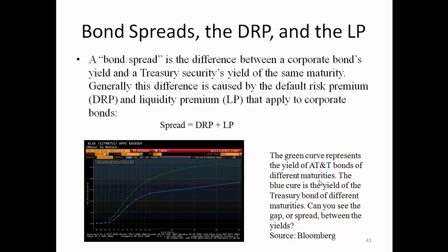A bond spread is the difference between a corporate bond yield and a treasury securities yield of the same maturity. This difference is caused by the default risk premium and liquidity premium that apply to corporate bonds. Treasury bonds are considered risk-free with no liquidity problems, so their default risk premium and liquidity premium are both zero. For example, the spread between a 5-year corporate bond and a 5-year treasury bond reflects the default risk premium and liquidity premium for that corporate bond.